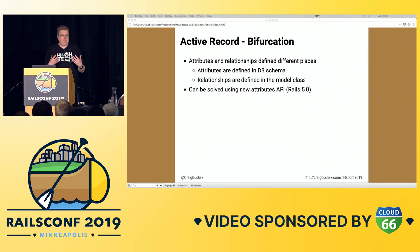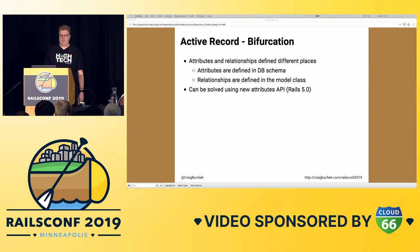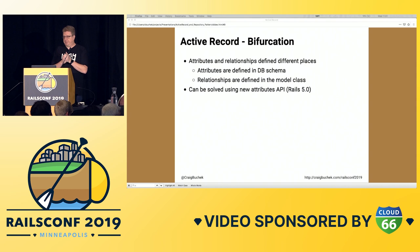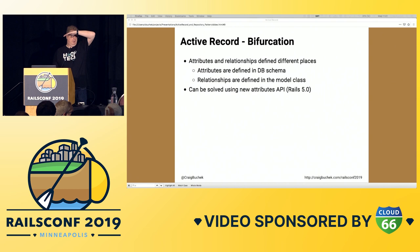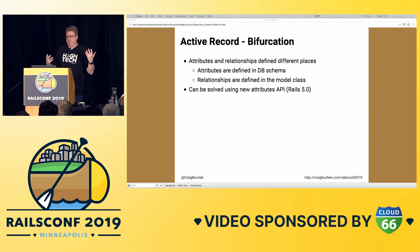You have to look in two places for all the details about a model — this is a case where there's too much magic for me. There are some workarounds: there's a model annotations gem and an Atom package to toggle showing the model's attributes from the schema, but unfortunately that's kind of broken for me. The attributes API actually came out in 4.2 but wasn't publicized until Rails 5. We have to use it and hardly anyone does. Does anyone here actually use annotations in their models in Active Record? Decent number — that's good.